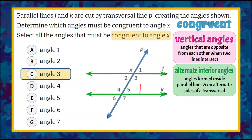Let's see what else is congruent to angle 3 inside the parallel lines and on alternate sides of the transversal. Seeing as angle X is congruent to angle 3 because they're vertical angles, the alternate interior angle to angle 3 is angle 4. These are on alternating sides of the transversal and inside the parallel lines, so they are alternate interior angles and are congruent. So now we know angle 4 is also congruent to angle X.